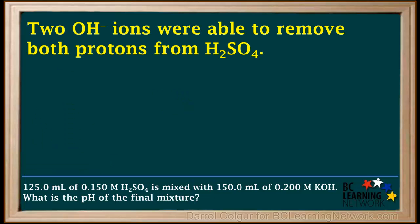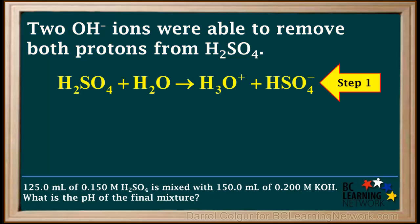So, in an indirect way, two hydroxide ions are able to remove both protons from a molecule of H2SO4. We'll show this with equations. As soon as the H2SO4 is added to water, it ionizes completely to form a hydronium ion and a hydrogen sulfate ion. We'll call this step 1.